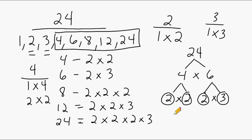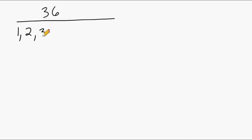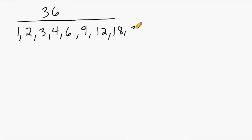Let's try another example. This time, let's take a look at the number 36. All of the factors of 36 are 1, 2, 3, 4, 6, 9, 12, 18, and 36. The only prime factors of 36 are the numbers 2 and 3, which means that they can be used to produce all of the composite factors of 36.